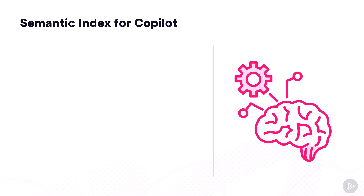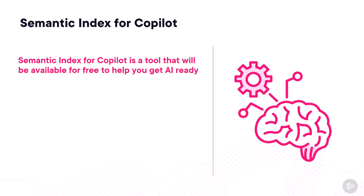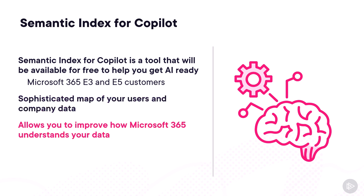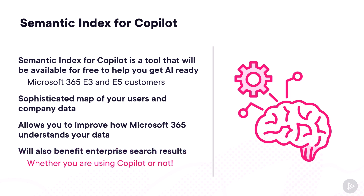Finally, we have the Semantic Index for Copilot — a tool Microsoft will make available for free to help organizations get Copilot ready, but only for organizations with Microsoft 365 E3 or E5 licenses. The Semantic Index is a sophisticated map of your users and company data that allows you to improve how Microsoft 365 and Copilot understand your data. Improving it also benefits enterprise search results, whether you are using Copilot or not.